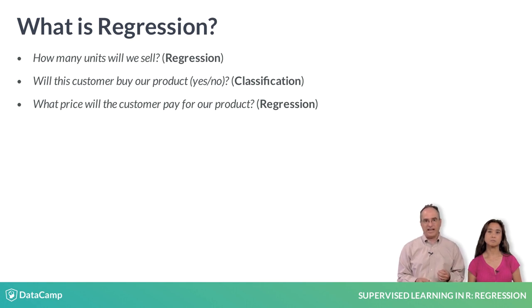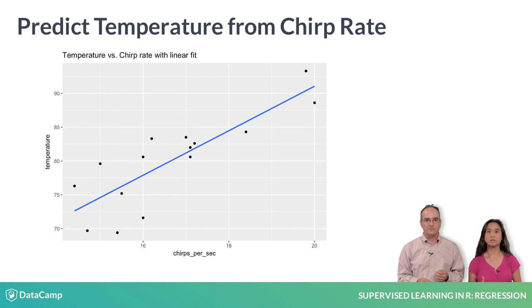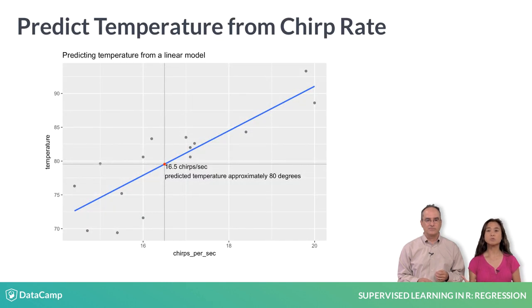Let's walk through an example regression task. Here we see a scatter plot of how fast a cricket chirps — chirps per second on the x-axis — and the temperature on the y-axis. Let's say our goal is to predict the temperature by measuring cricket chirp rate. Suppose we fit a linear regression model to this data — we'll show you how later in this course. The predictions from this model are shown by the blue line. If we assume that temperature is linearly related to cricket chirp rate, then the blue line is the best fit line through the data, and it predicts what the expected temperature should be based on the observed chirp rate. For example, suppose we hear a cricket chirping at 16.5 chirps per second — this model predicts a temperature of about 80 degrees.